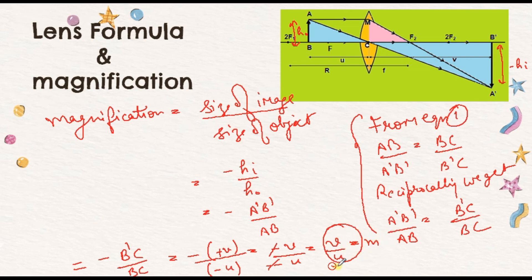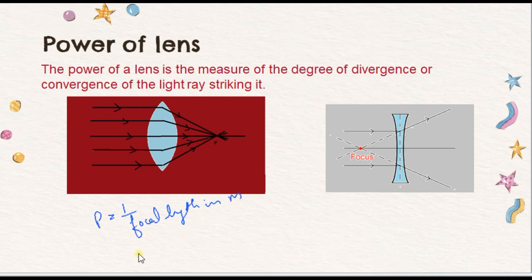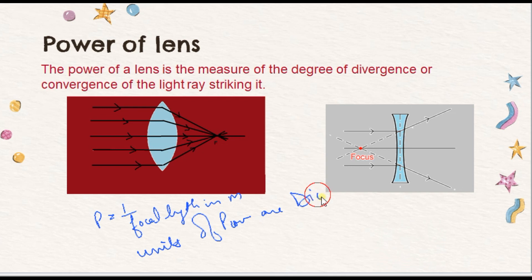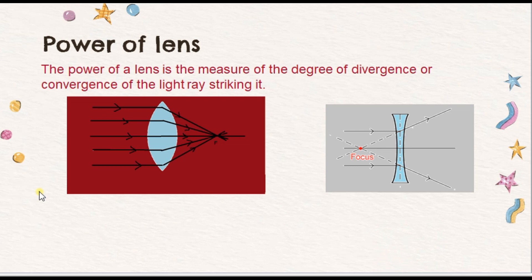Now we proceed to the power of lens. Power of lens is the converging or diverging ability of the lens — converging for convex lens and diverging for concave lens. Power is given by P = 1/f, where f is the focal length in meters. The unit of power is diopter (D) or meter inverse. Note: focal length is often given in centimeters, so convert to meters before applying the formula.